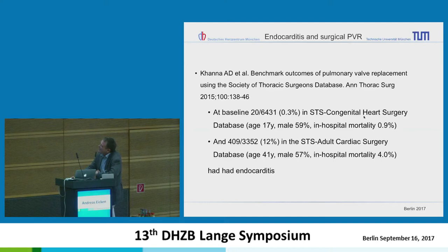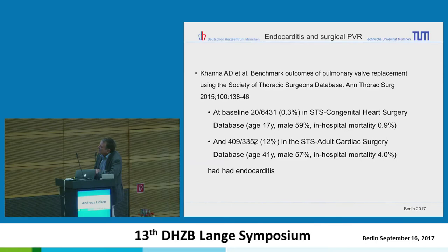Looking at the STS database from 2015, among 6,430 patients aged 17 years coming for pulmonary valve replacement, prior endocarditis was very low at baseline. But in patients operated at age 41 — again more than 3,000 patients — 12% had had a prior endocarditis. So you really have to take a thorough anamnesis to properly account for this endocarditis background.